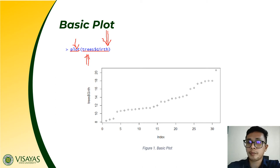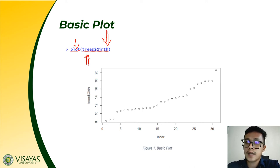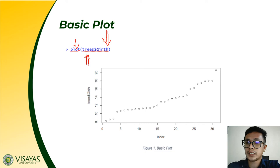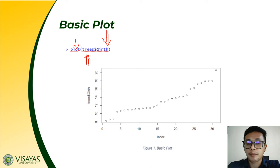The output of the plot function is a graph displayed in our plots tab. The default style of the plot is symbols. The plot function is not limited to one-dimensional plots — the plot type depends on the type and number of variables passed as input, and plots can be further customized as we go along.